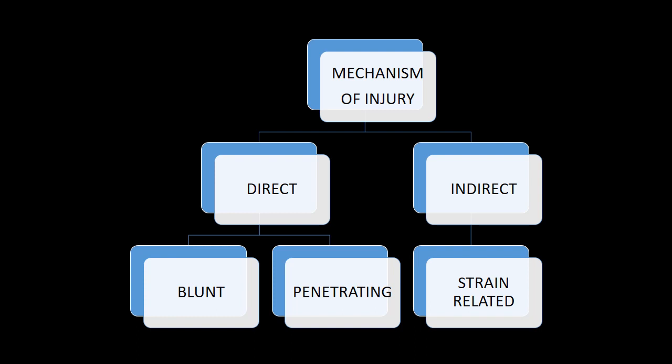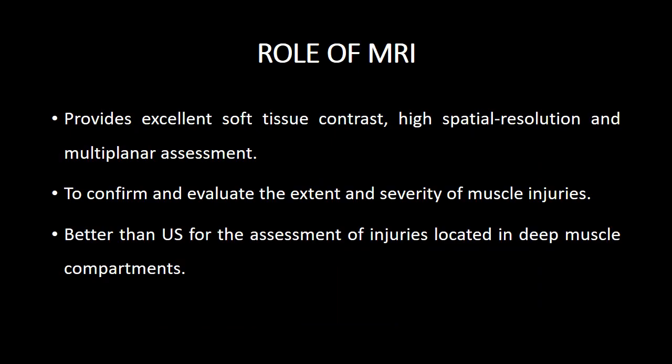The mechanism of injury can be a direct or an indirect trauma. An indirect trauma is usually strain related and more commonly seen. Direct trauma can be a blunt or penetrating injury. MRI provides an excellent soft tissue contrast and multiplanar assessment. It is used to confirm and assess the extent and severity of muscle injuries, and it is better than ultrasound in detecting deeper compartmental muscle injuries.